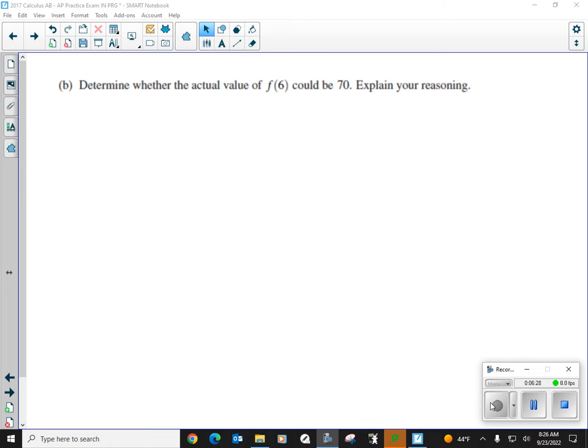So, 4B is sort of an oddball question. I really don't see them ask things like this that often, especially the way you've got to figure it out. It's just, it's a little weird, but it is very doable. All right? You just got to know what you need to pull from. Determine whether the actual value, the actual value of f of six could be 70 and explain your reasoning. Oh, my God. We got to explain.